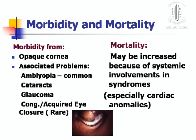Coming to the morbidity and mortality: morbidity of corneal disorder is mainly due to opaque cornea and associated problems in the form of amblyopia, which is most common. It is followed by cataract, glaucoma, and sometimes congenital and acquired eye closure, which is a rare phenomenon. Mortality is due to systemic involvement in syndromes, mainly due to cardiac anomalies.